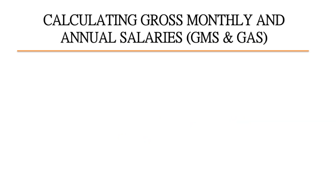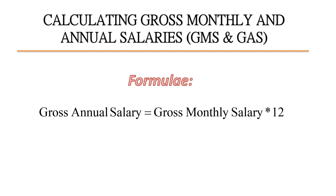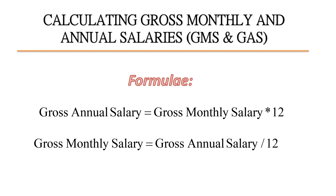The first thing we will look at is calculating gross monthly and gross annual salaries, or GMS and GAS. Gross annual salary equals gross monthly salary times 12: GAS = GMS × 12. The gross monthly salary equals the gross annual salary divided by 12: GMS = GAS ÷ 12.